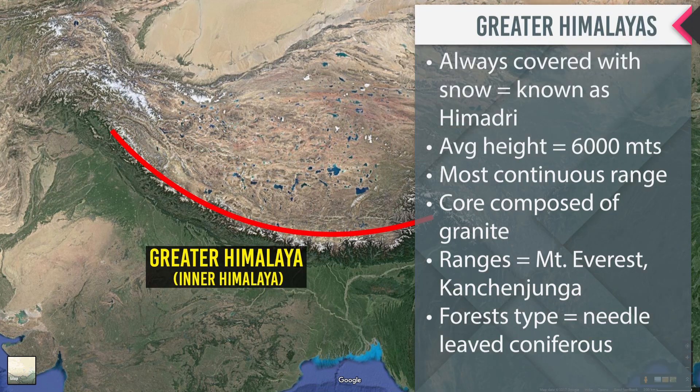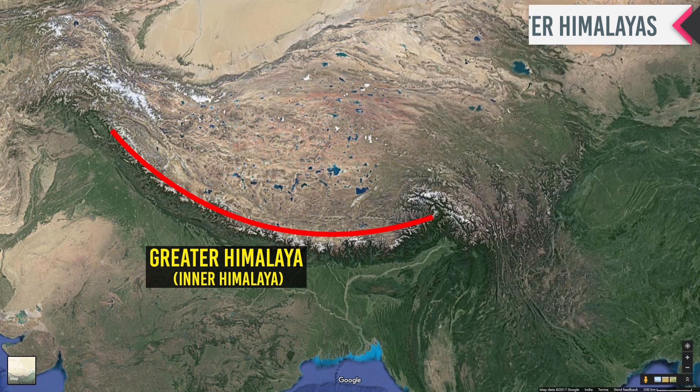The Greater Himalaya, also known as Inner Himalaya, is always covered with snow and hence known as Himadri. The average height is 6000 meters. It is the most continuous range, with its core composed of granite. Its ranges include Mount Everest and Kanchenjunga. The Greater Himalayas support needle-leaved coniferous forests.